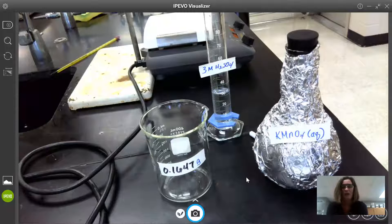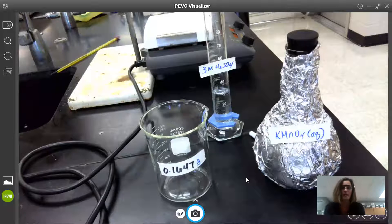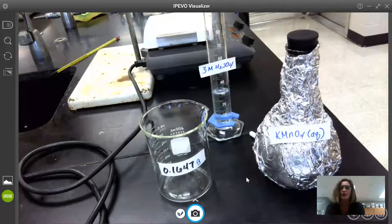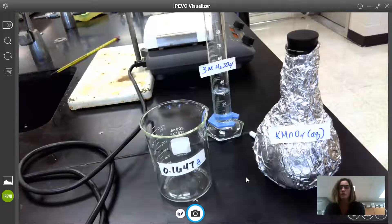I wanted an estimate of about how much sodium oxalate would I have to use in order to use about 25 milliliters of my KMnO4 solution.